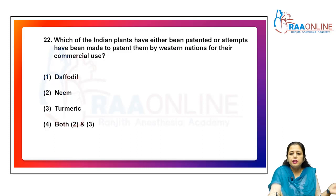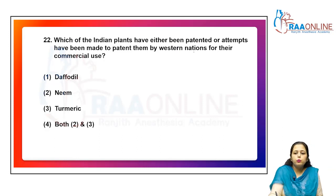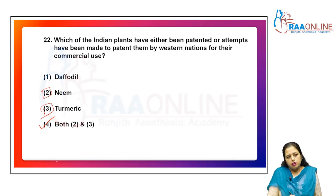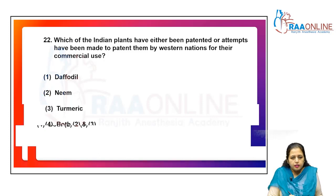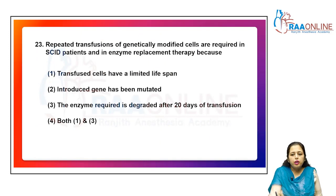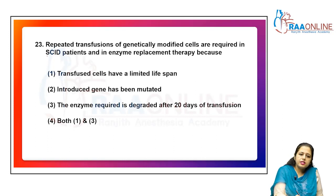Which Indian plants have either been patented or had attempts made to patent them by western nations for commercial use? The answer is both neem and turmeric — options 2 and 3 — as both are commercially used.